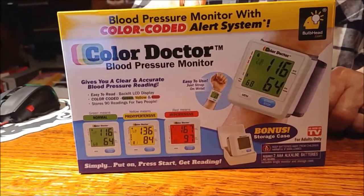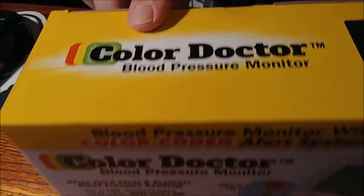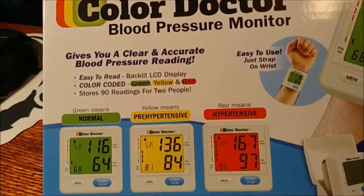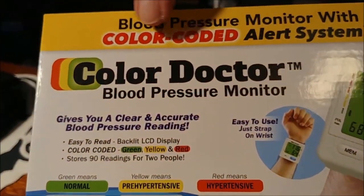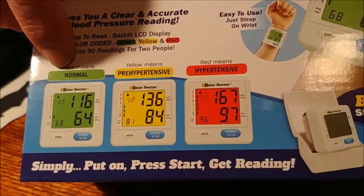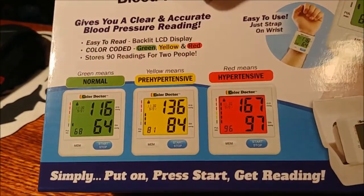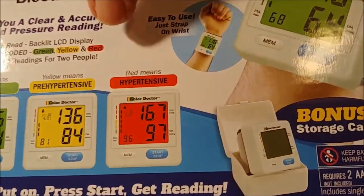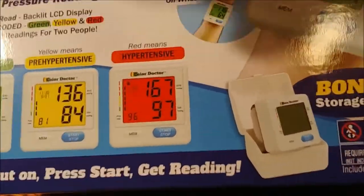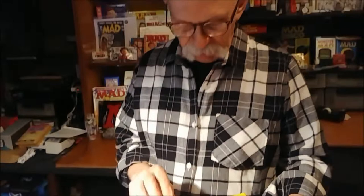Color Doctor blood pressure monitor. And I'm assuming you probably get some crayons in there. So if you color the screen green, you'll be normal. If you color it yellow, you are pre-hypertensive. And if you color it red, then you are hypertensive.